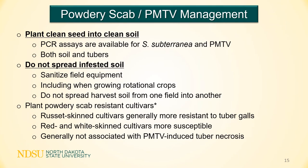Effective management strategies for these two pathogens are extremely limited. Therefore, if your fields are clean, you really need to work hard to keep it that way — plant clean seed into clean soil. PCR assays are available for both pathogens and are effective for testing both soil and tubers. Do not spread soil from infested fields. If the soil is infested with Spongospora, those resting structures may be carrying the virus. Russet skin cultivars are generally more resistant to tuber pustules than red and white skin cultivars. It is important to note that insensitivity to PMTV tuber necrosis is not necessarily associated with resistance to powdery scab.